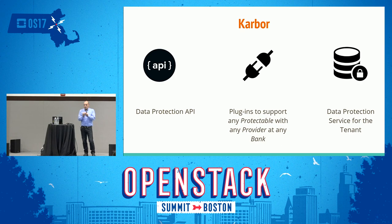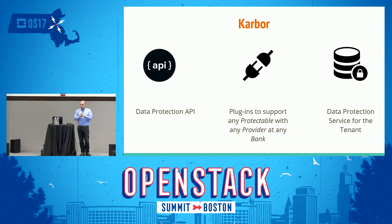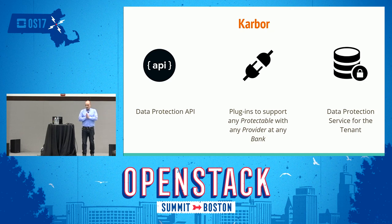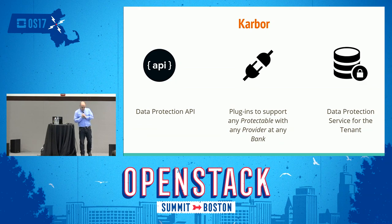A protectable is everything in an OpenStack application that you want to protect: a VM, a volume, an image, your settings, your network configuration — each with any provider. A provider is a solution you're buying from someone, using open source, or writing yourself. And you protect it at any bank. A bank is where the data is protected — for example, on the public cloud if you're on the private cloud.